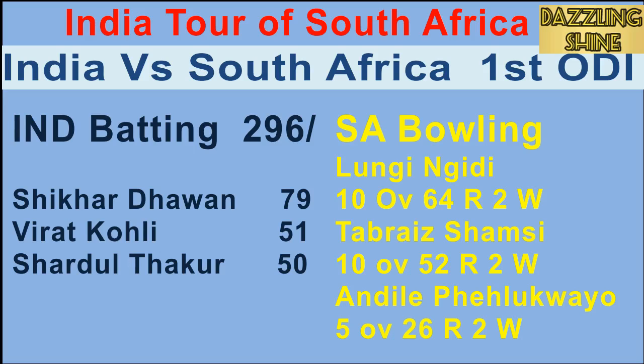Fourth ball of the 21st over, Shamsi to Dhawan — Dhawan goes for the sweep, takes the top edge, and it's gone all the way to the boundary rope for four runs.